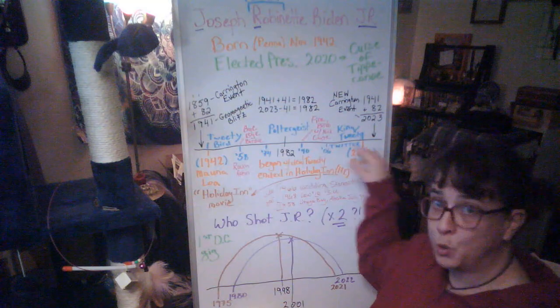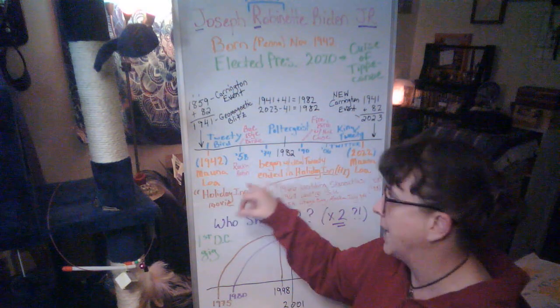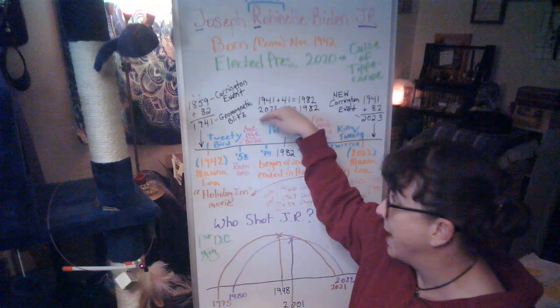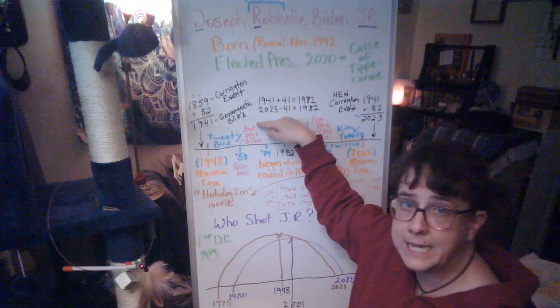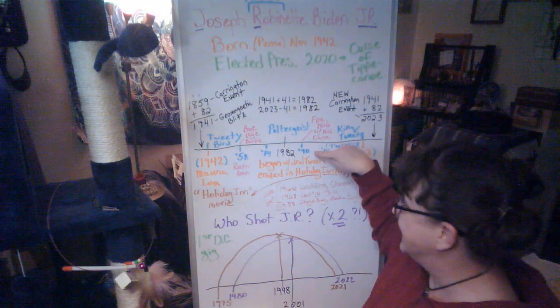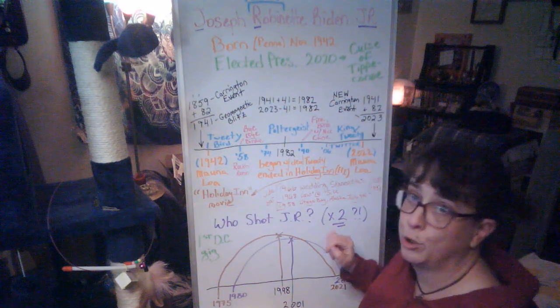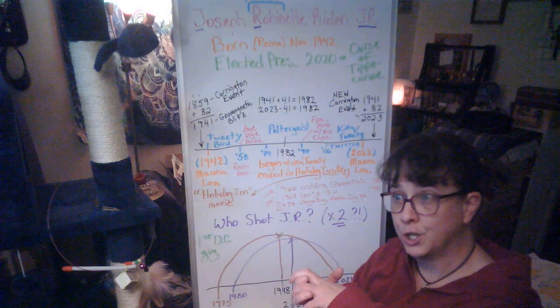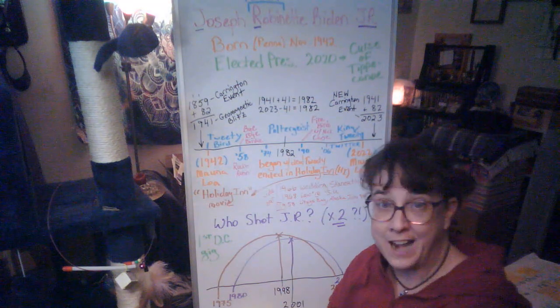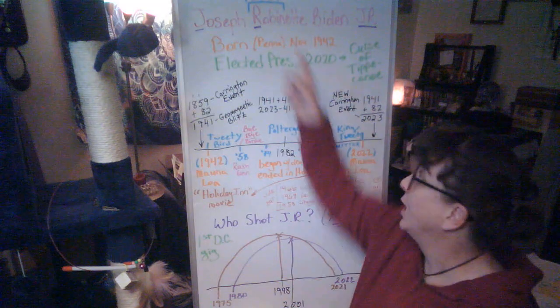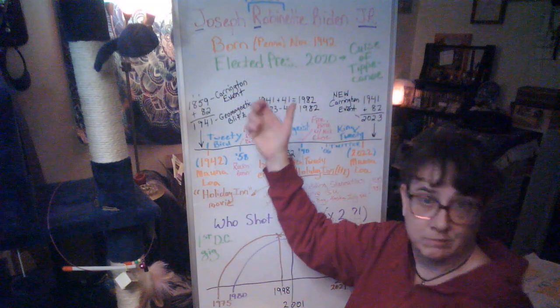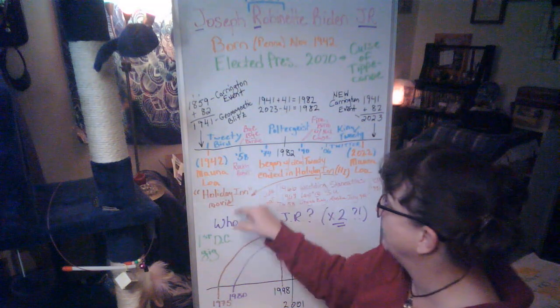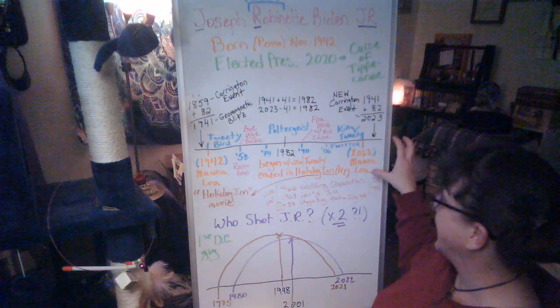Here's some other things on the Tweety Bird timeline, the Twitter Tweety Bird timeline. We've got Rockin' Robin, which ties to Robinette here. And we have Bye Bye Birdie. Those are both connected to 1958. And then, in 1990, we have the movie Firebirds, with Nick Cage. So, it's a birdcage, but it's also, like, Trump, you're fired. Right? So, Firebirds. Fire. Bird. Firebird.